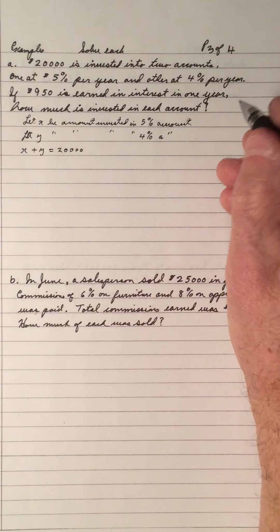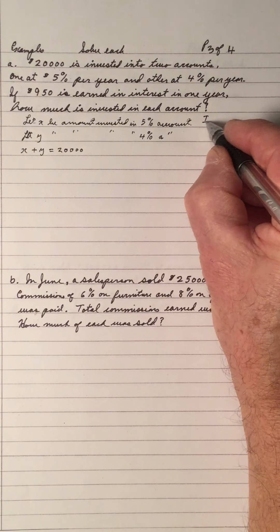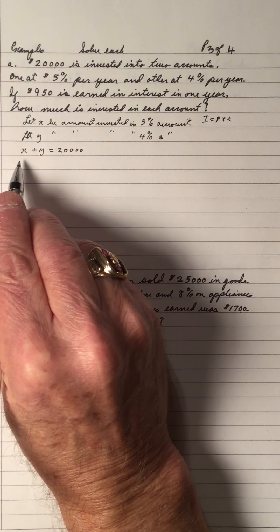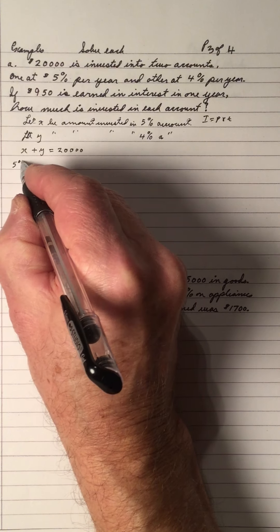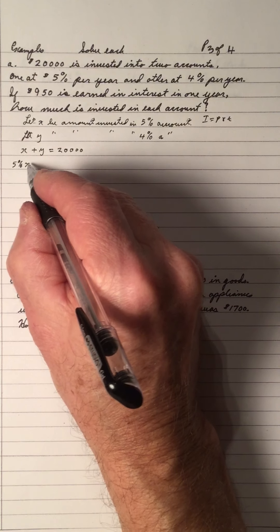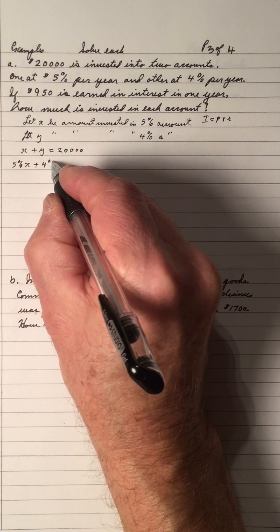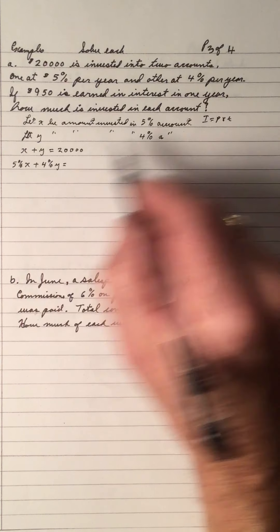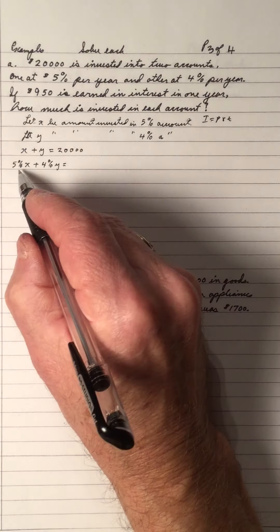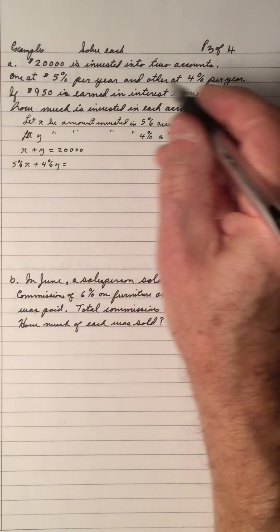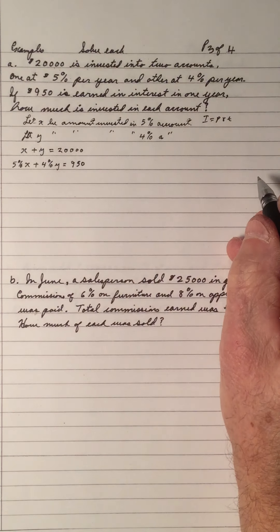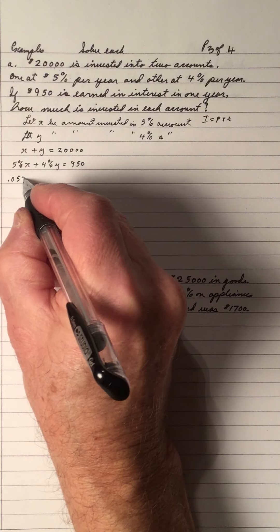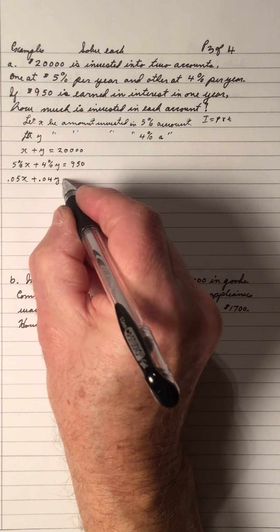Remember: Interest = Principal × Rate × Time. So 5% × X × 1 year gives the interest from the first account, and 4% × Y gives the interest from the second. Together they equal $950. Changing percents to decimals: 0.05X + 0.04Y = 950.